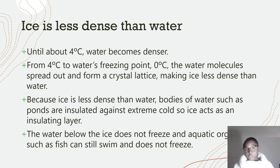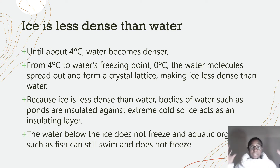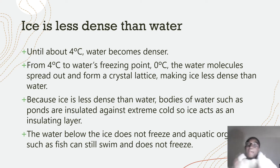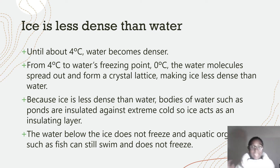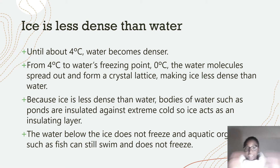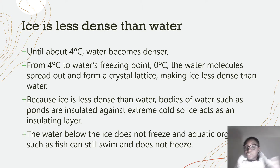Ice is less dense than water. Until about four degrees, water gets denser, but from four degrees to its freezing point, the water molecules spread out and align themselves to form a crystal lattice, and that makes ice less dense than water. Because ice is less dense than water, bodies of water such as ponds, lakes, and rivers are insulated against extreme cold conditions. Ice acts as an insulating layer, meaning the water beneath it remains liquid and not frozen, so aquatic animals like fish can still swim and not freeze.